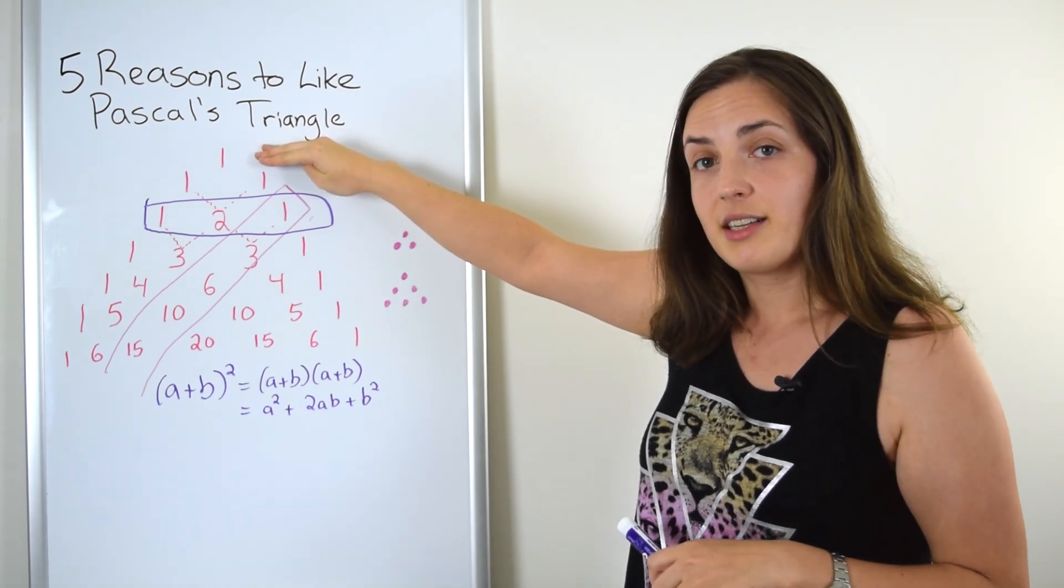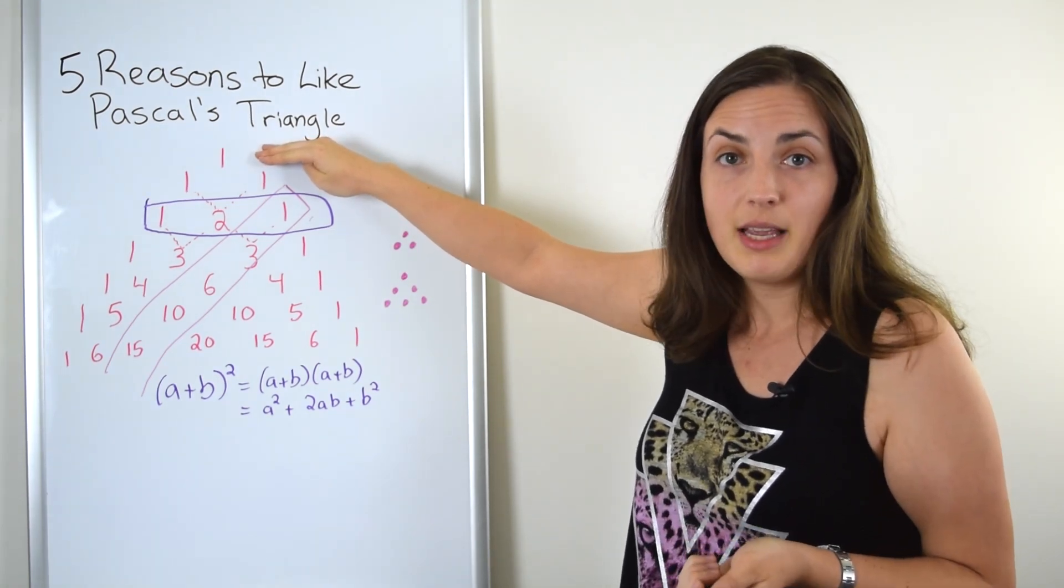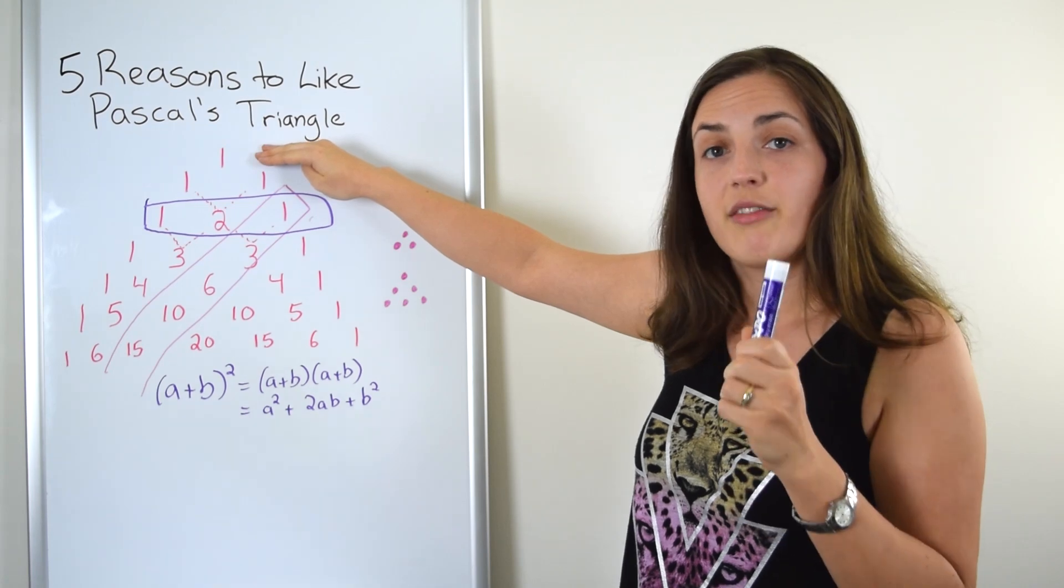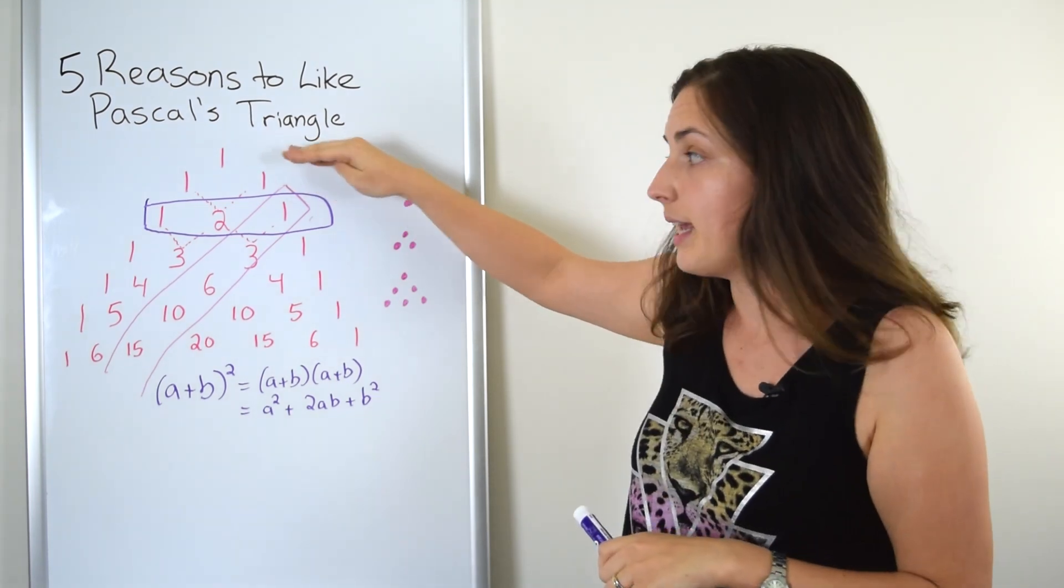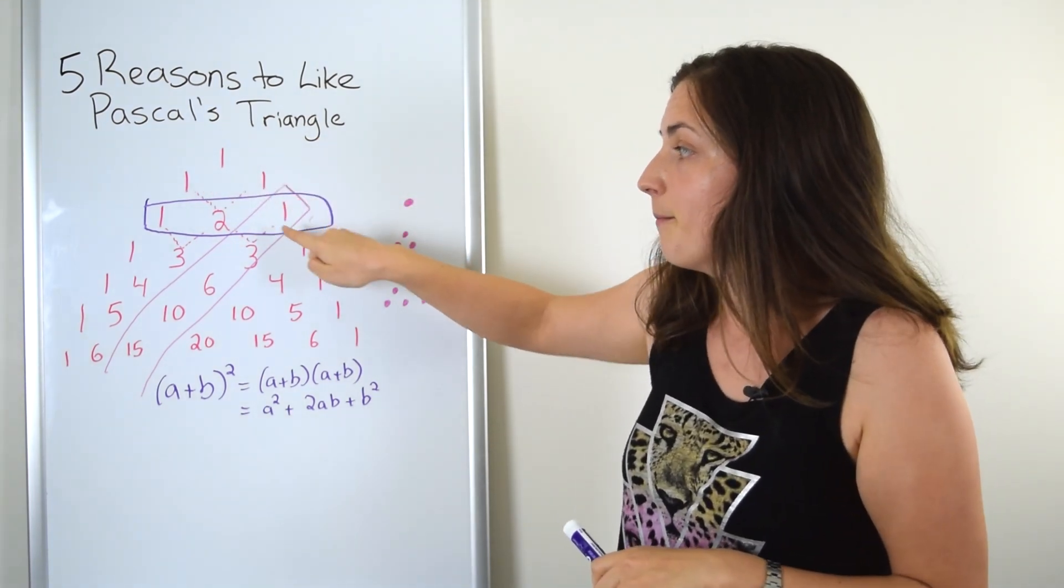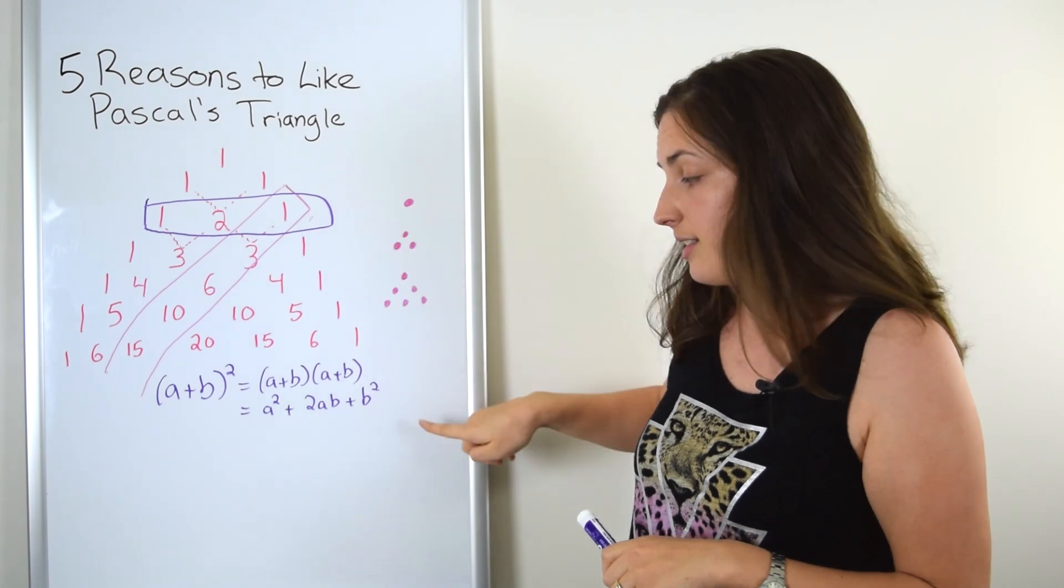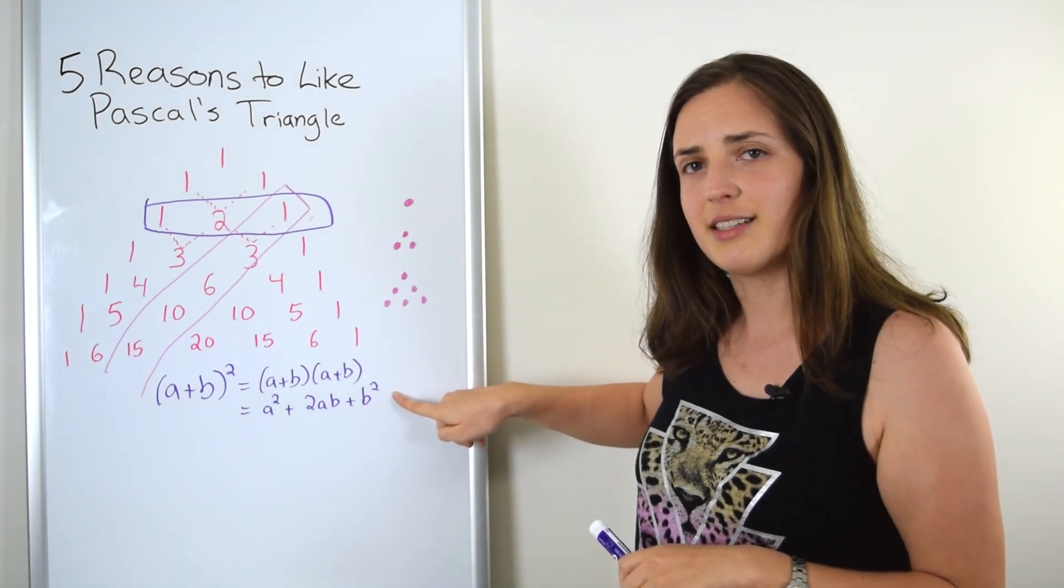If you take (a+b) to the power of one, you just get a plus b, and there's a coefficient of one in front of the a and a coefficient of one in front of the b. That gives you this one, one.